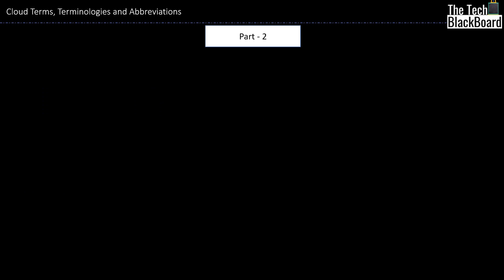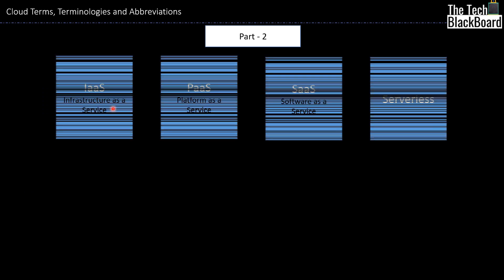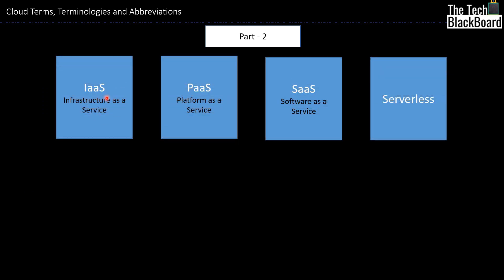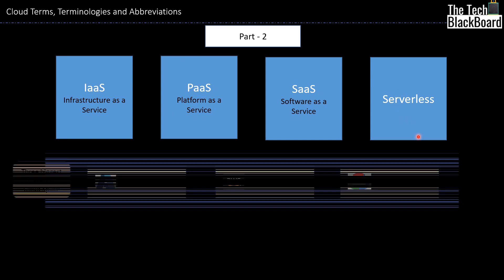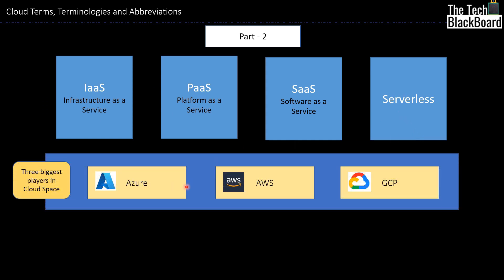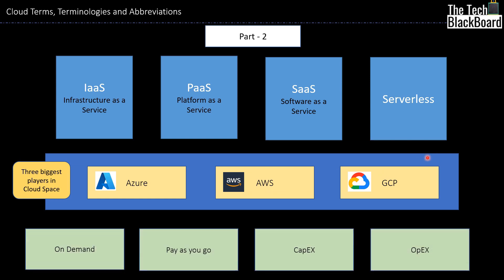In the previous part, part two, I covered the concepts of IaaS — infrastructure as a service — PaaS, platform as a service, and SaaS, software as a service, along with the serverless concept. I also explained who are the big players in the cloud space. Besides that, we also took a deep dive into core concepts of cloud like on-demand, pay-as-you-go, CapEx which is capital expenditure, and OpEx which is operational expenditure.